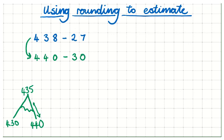Now, let's do this one. 440 take away 30. Oh, that's a nice and easy one. We've got nothing in the tens, nothing in the ones. We've got 4 tens take away 3 tens, which will leave me 1 ten. And then my 100s aren't touched. So, that's going to be nearly 410. That's going to be my estimate.